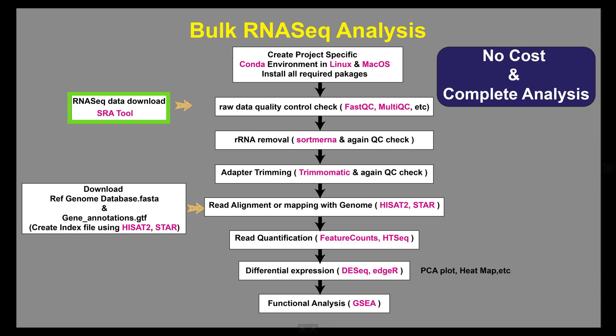The SRA toolkit is a command line program for downloading, searching, and interacting with data stored in the NCBI Sequence Read Archive, a database of high-throughput sequencing data.